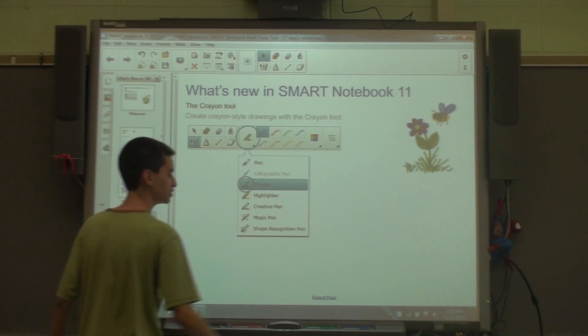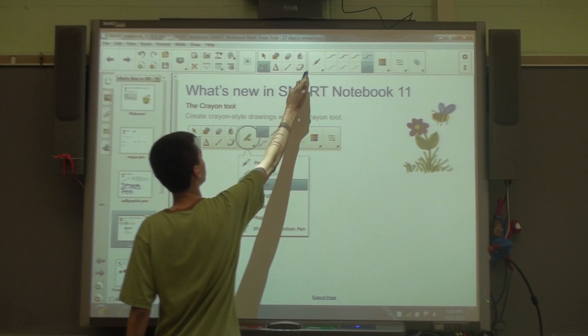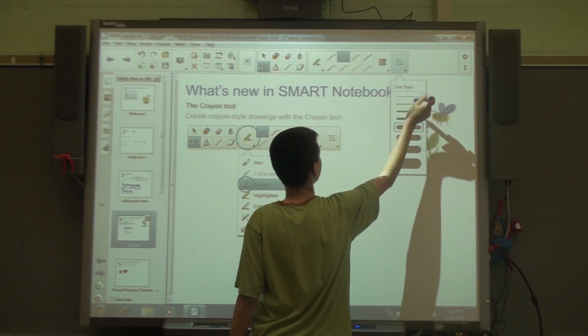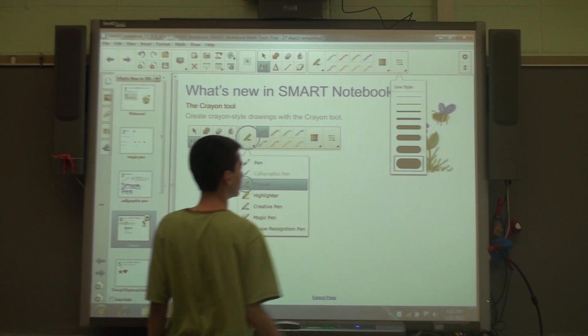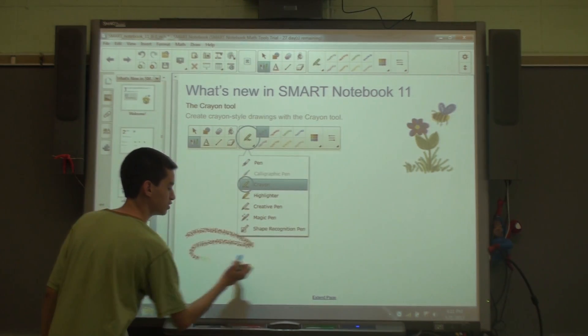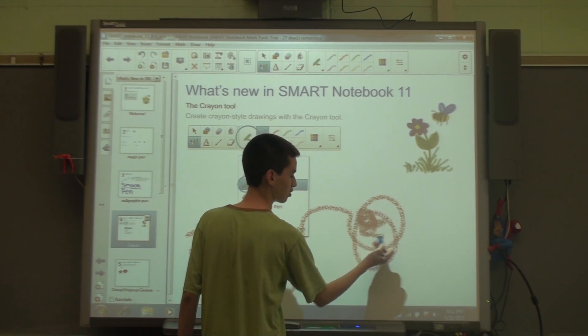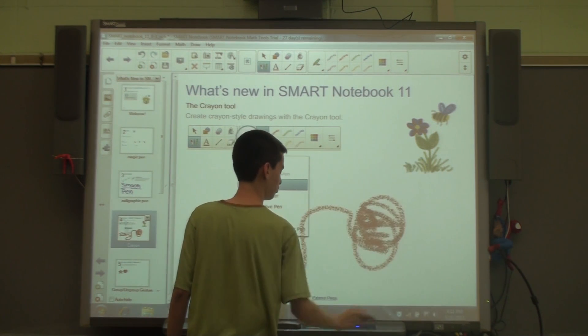New on Smart Notebook 11 is the new crayon tool or pen. If I click on the pen, I'm able to change my color to red, use my properties tab to make my pen bigger. It's just like a normal pen. The darker I go on an object, the darker the crayon will get. Here's a picture of an example.